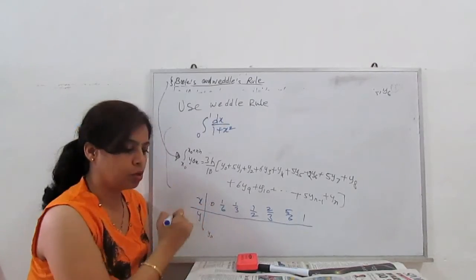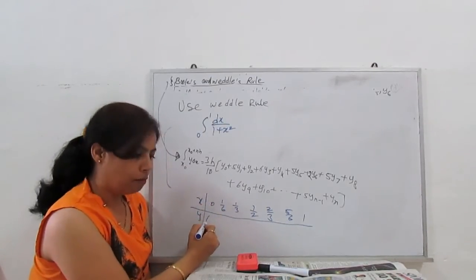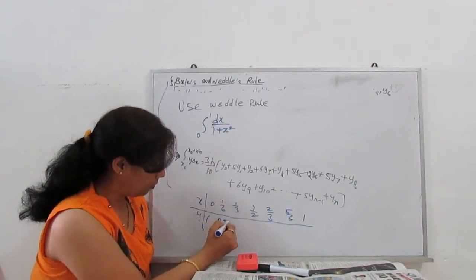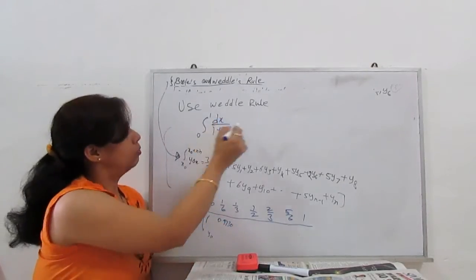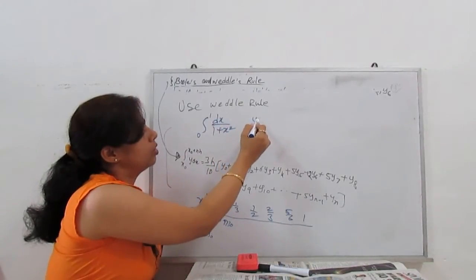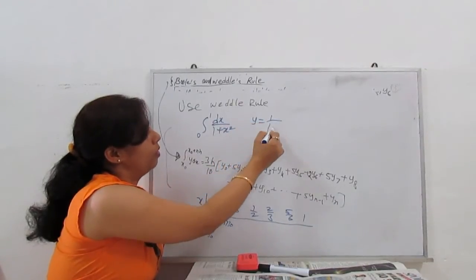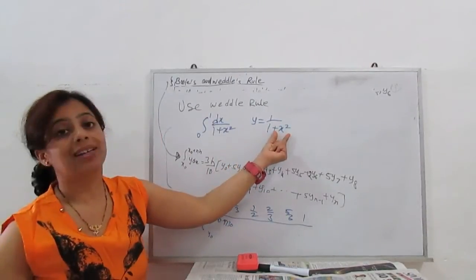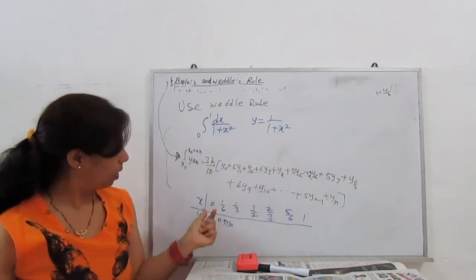So regarding this, our values are: this is x0, so this is our y0. Y0 is 1. Y1 is 0.9730, because here y equals 1 upon 1 plus x squared. Clear? So when I put x equal to 0, y becomes 1. When I put x equal to 1/6, then our y becomes 0.9730.